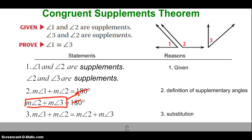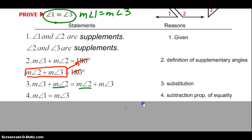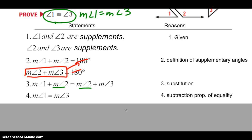Some of you might be catching on now. In this equation we have the measure of angle 2 on each side — that's a common value which we can subtract out. Keep the prove statement in mind: we want to show angle 1 congruent to angle 3, which means we need the measure of angle 1 to equal the measure of angle 3. We get that by using the subtraction property of equality, subtracting the measure of angle 2 from each side, leaving us with the measure of angle 1 equals the measure of angle 3.